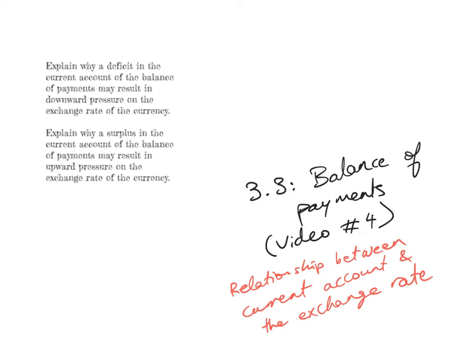This is video number 4 of the Balance of Payments mini-series, which is unit 3.3 of the IB Economics International Economics Syllabus. In this video I'm going to talk about the relationship between the current account and the exchange rate.